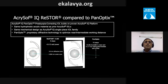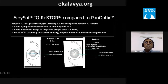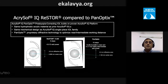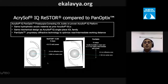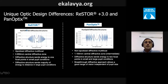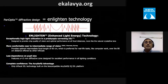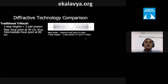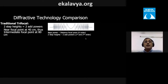Comparing bifocal (ReSTOR) to trifocal (PanOptix): the PanOptix has a larger total diffractive zone area. The PanOptix also uses the IQ (Enlighten) optic technology with a quadrifocal design — three step heights providing add powers at 40 cm, 60 cm, and 120 cm — effectively giving far, near, and two intermediate distances.